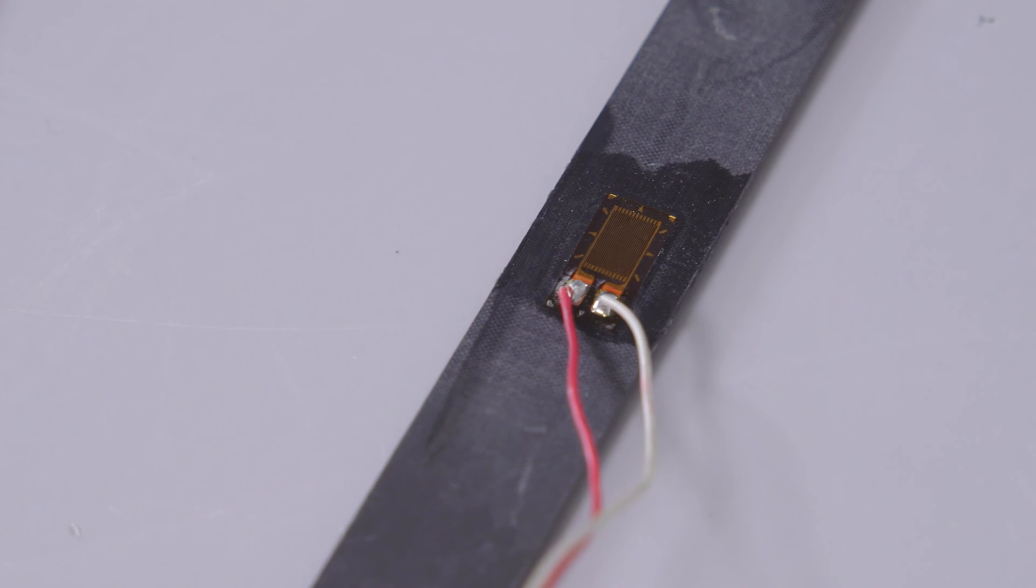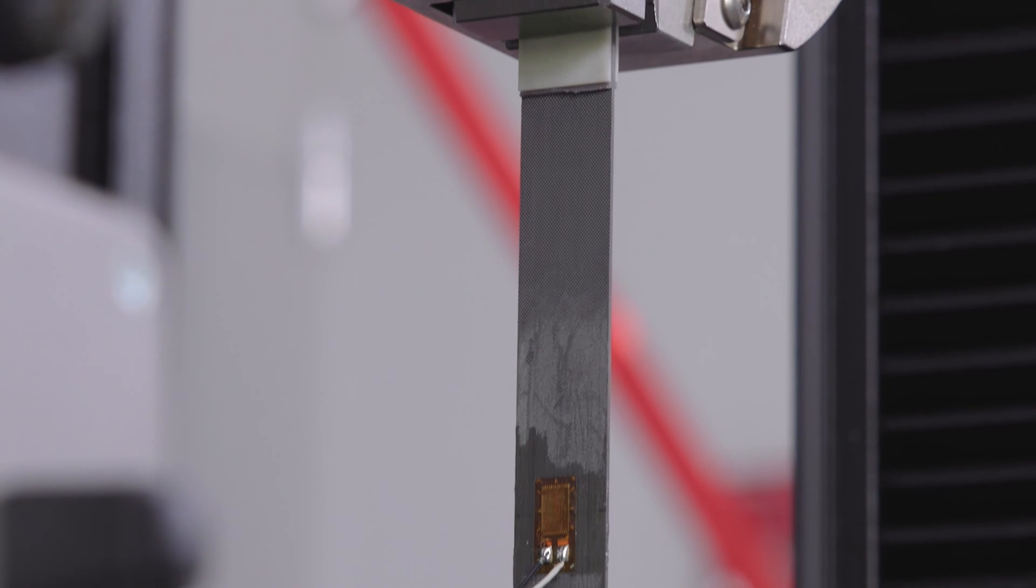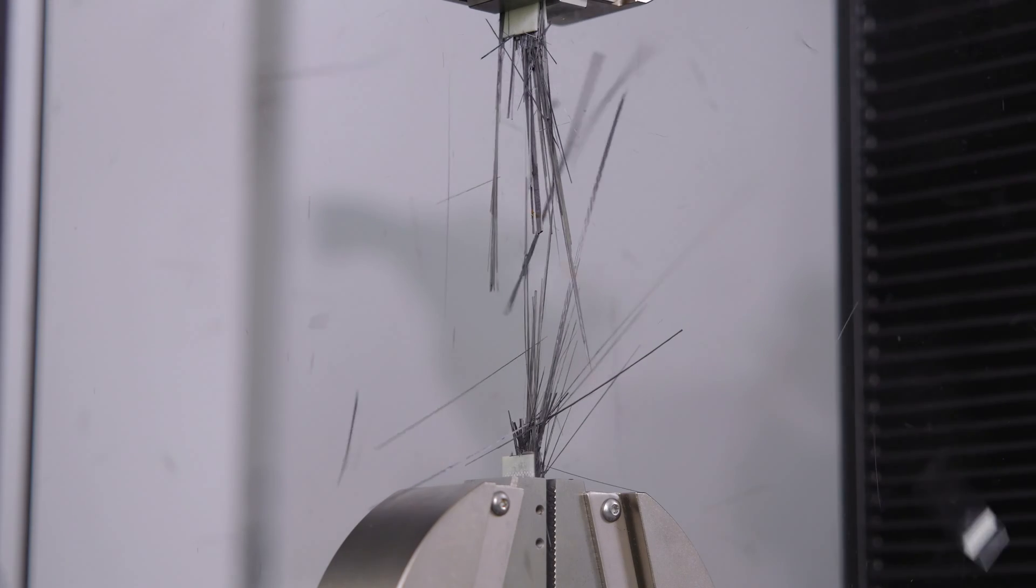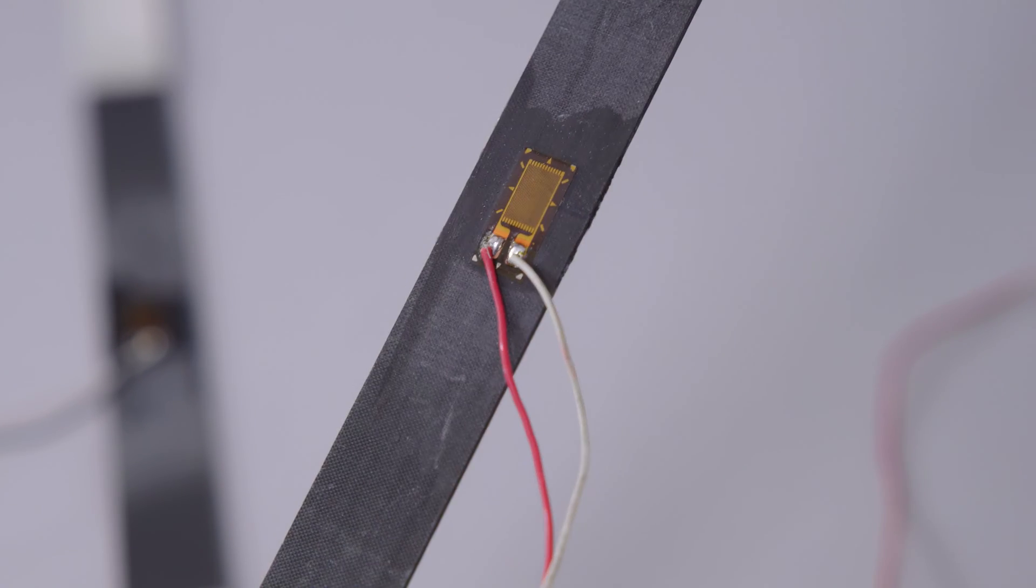Strain gauges are single use devices that are bonded directly to a specimen and are commonly used to measure strain on brittle materials such as composites which exhibit minimal elongation. Though simple, these devices require considerable preparation and operator skill to use correctly.